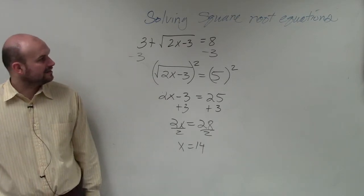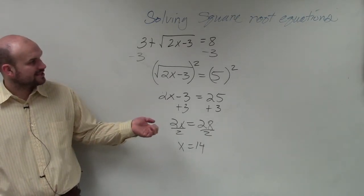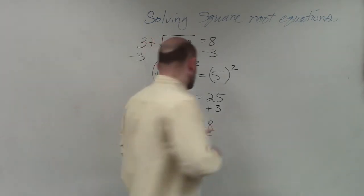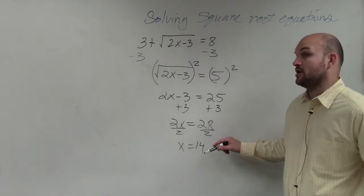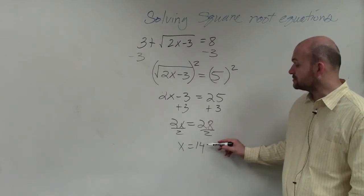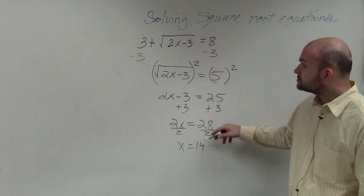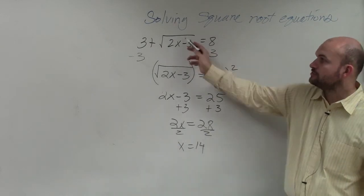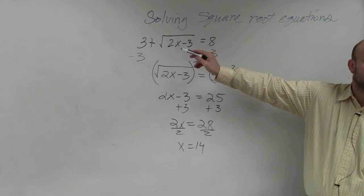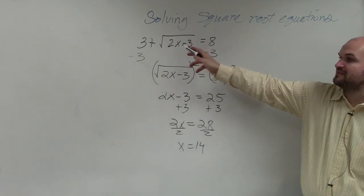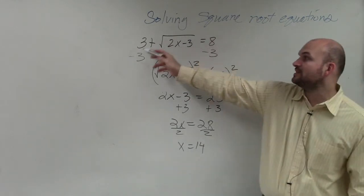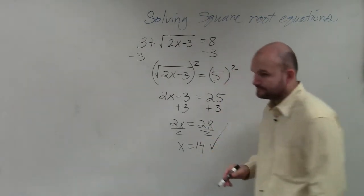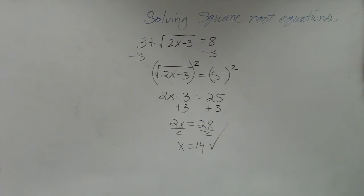Now, it's going to be very important, ladies and gentlemen, that we make sure that we check our answers to make sure they make sense. So I'm going to plug in 14, because there are going to be problems where we're going to have extraneous solutions. So you have 14, plug it back in for x. I'm just going to do this in my head. 2 times 14 is 28, minus 3 is 25. The square root of 25 is 5. 5 plus 3 equals 8, so this does work.